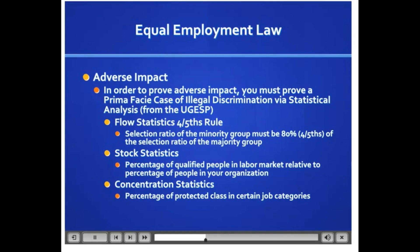To make your prima facie case, you have to have enough cases to do a statistical analysis. We want to look at historically three factors: flow statistics, stock statistics, and concentration statistics. Flow statistics are the rate at which people flow into the company from the selection pool — the rate at which we hire them. We're going to compare the selection ratio of the two groups — the majority and the minority group — to see if they're comparable.